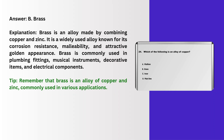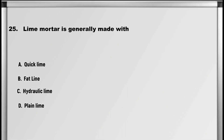Explanation: Brass is an alloy made by combining copper and zinc. It is a widely used alloy known for its corrosion resistance, malleability, and attractive golden appearance. Brass is commonly used in plumbing fittings, musical instruments, decorative items, and electrical components. Tip: remember that brass is an alloy of copper and zinc, commonly used in various applications.